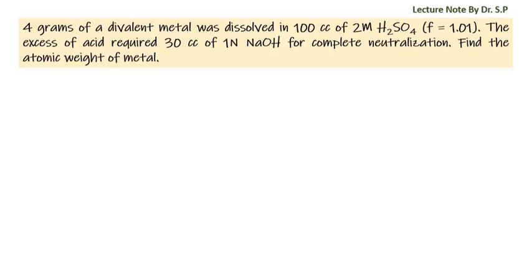We have a question: 4 grams of a divalent metal was dissolved in 100 cc of 2 molar sulfuric acid with concentration factor 1.01. The excess of acid required 30 cc of 1N sodium hydroxide for complete neutralization. Find the atomic weight of the metal.